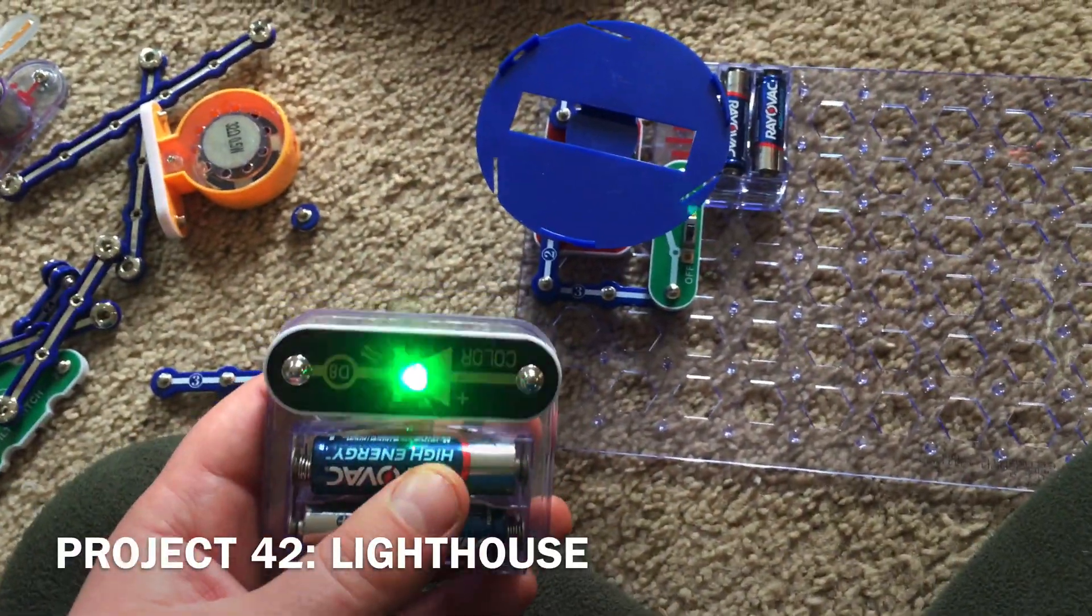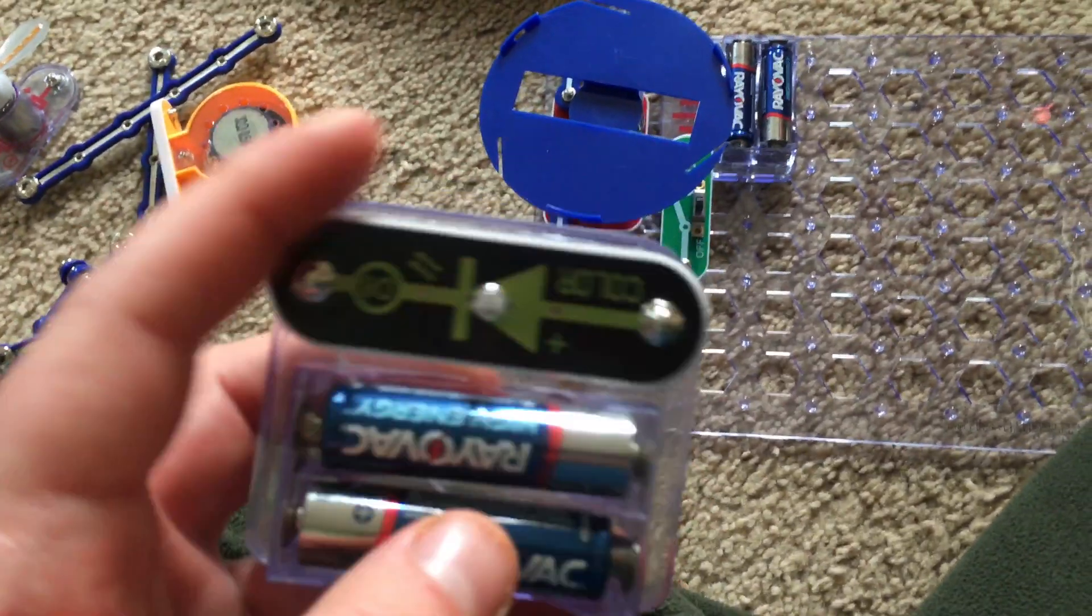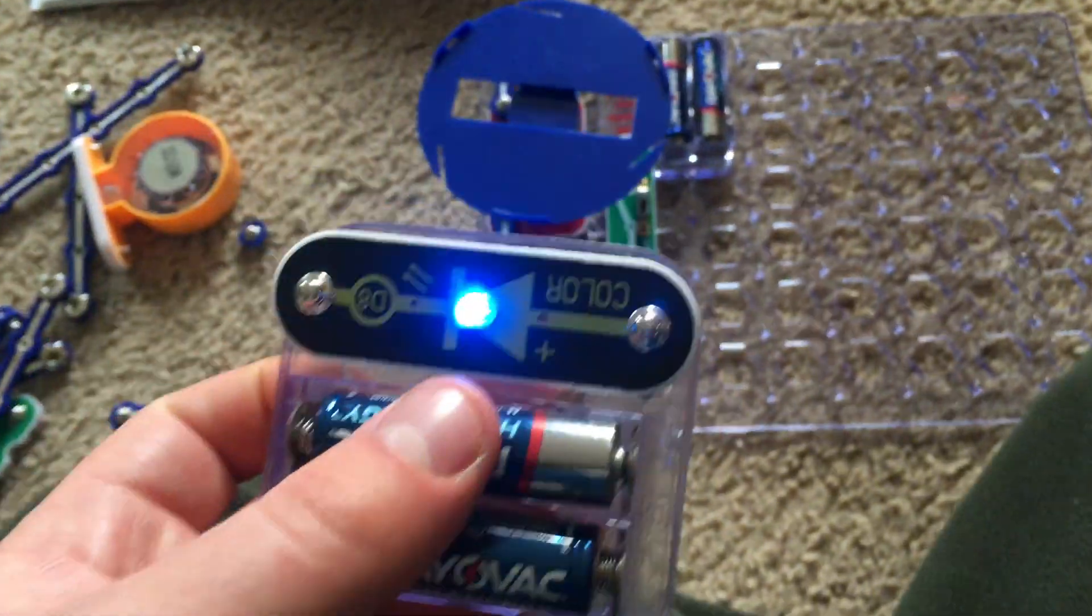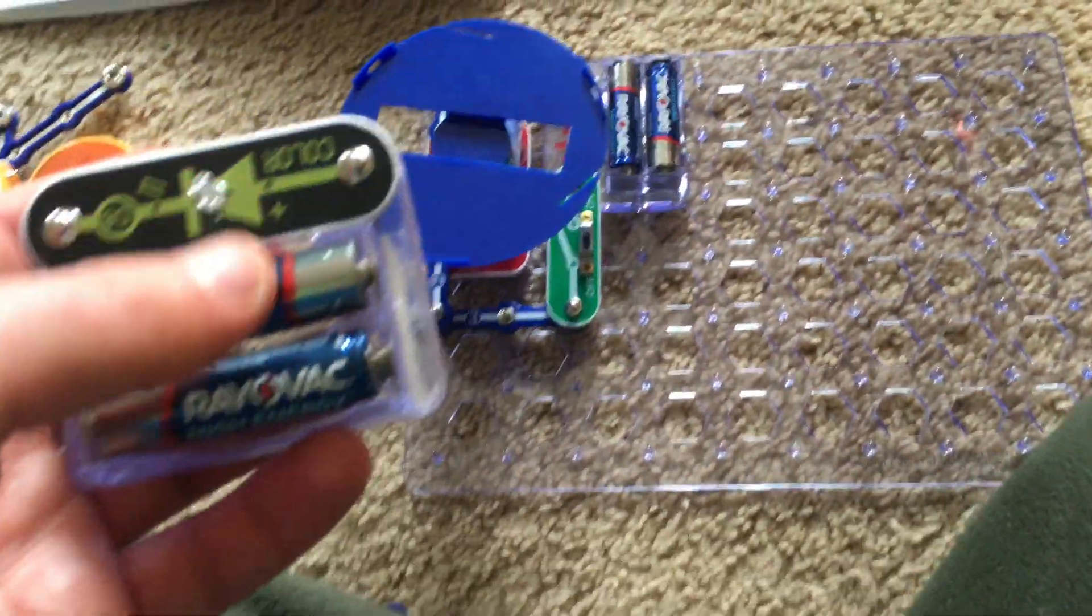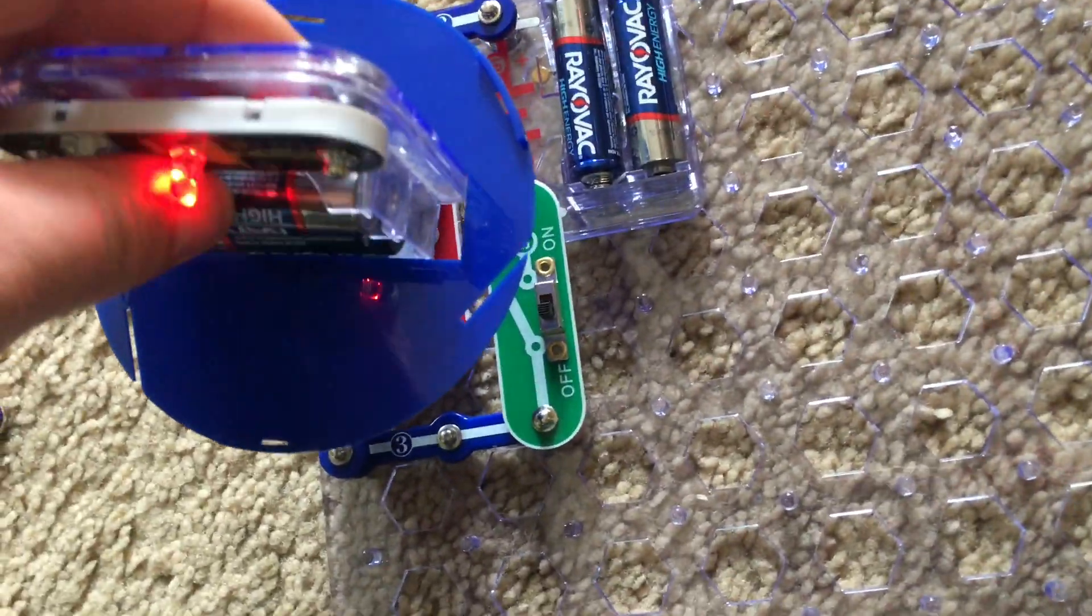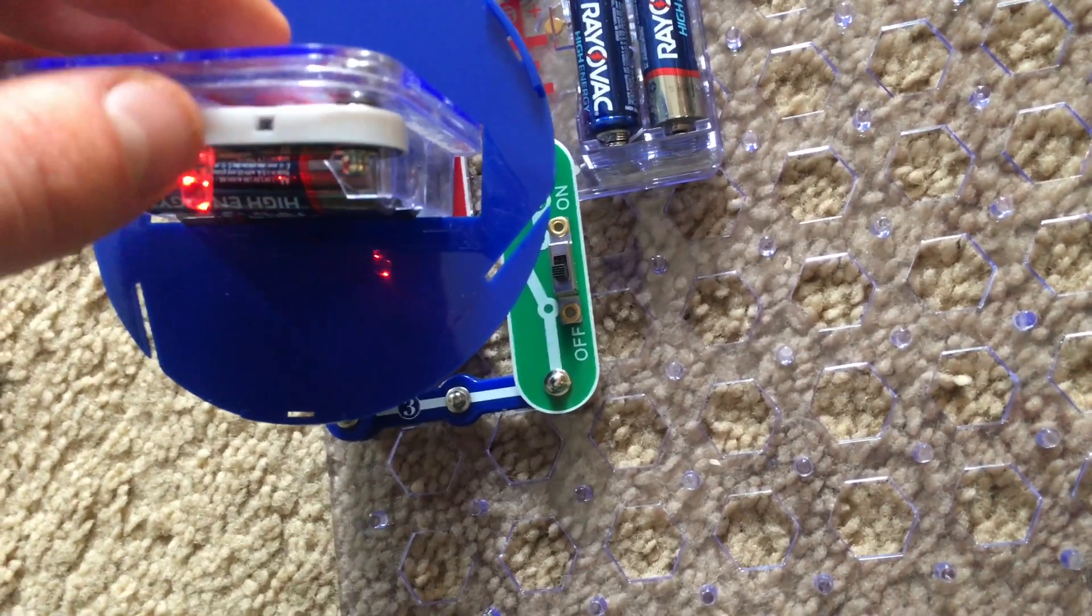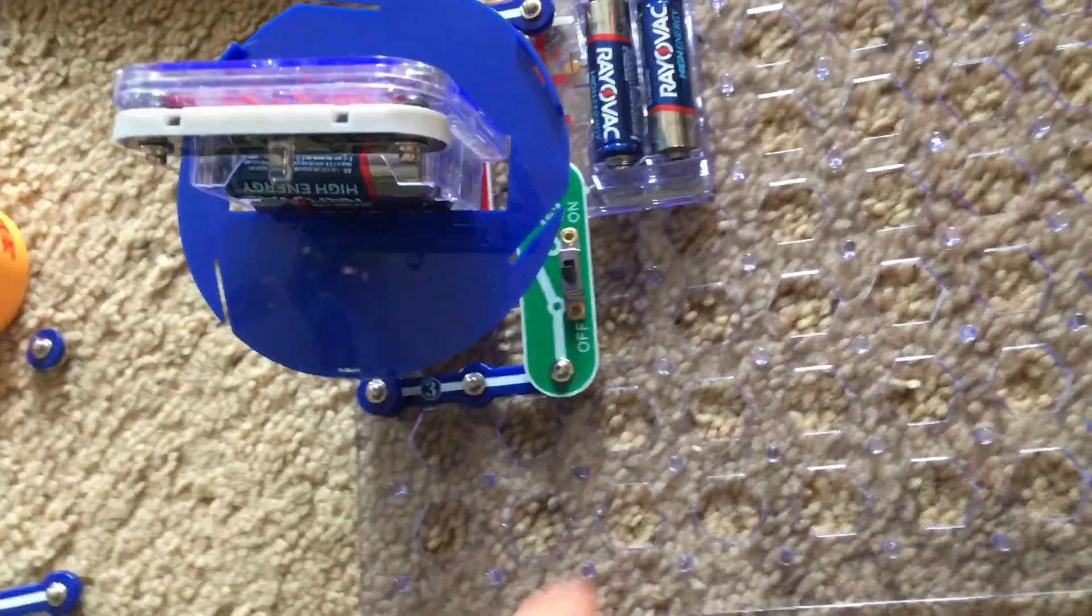But for Project 42, Lighthouse, I am going to mount the color LED on a battery holder and it will flash. I will then place it on the merry-go-round. So it's steady like that, and make sure that it's firmly in place.